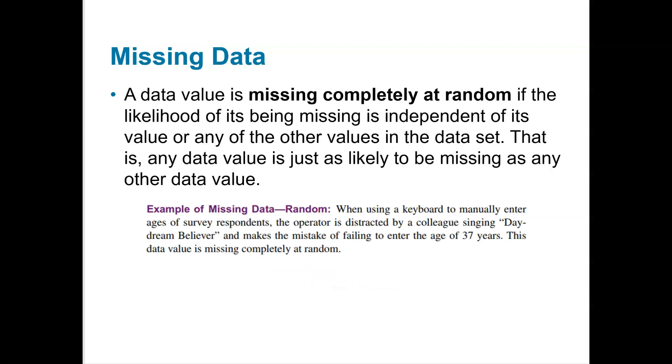And then we come to missing data. So sometimes we've got data and the value is missing completely at random. So let's look at this example. So if someone was manually entering in ages of survey respondents and someone's distracted and they make the mistake of failing to enter one age, that would be called missing completely at random. It wasn't malicious. It wasn't intentional. It just happens. And that is normal. People have to enter these and they make mistakes.